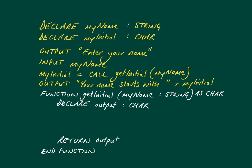Let's finish off the function with some actual code to show it working. What we're doing in this line is setting the variable 'output' to hold the value of the substring of 'my name' starting at position one and going for one character. So if my name contained 'Ian', it would take the first letter, which is 'I', and store it in output. Then it would return that to the calling code.